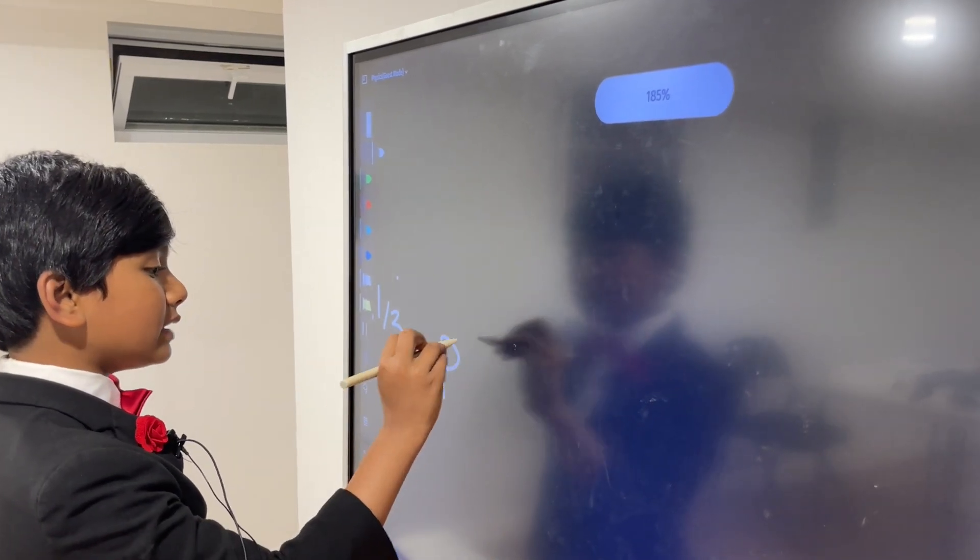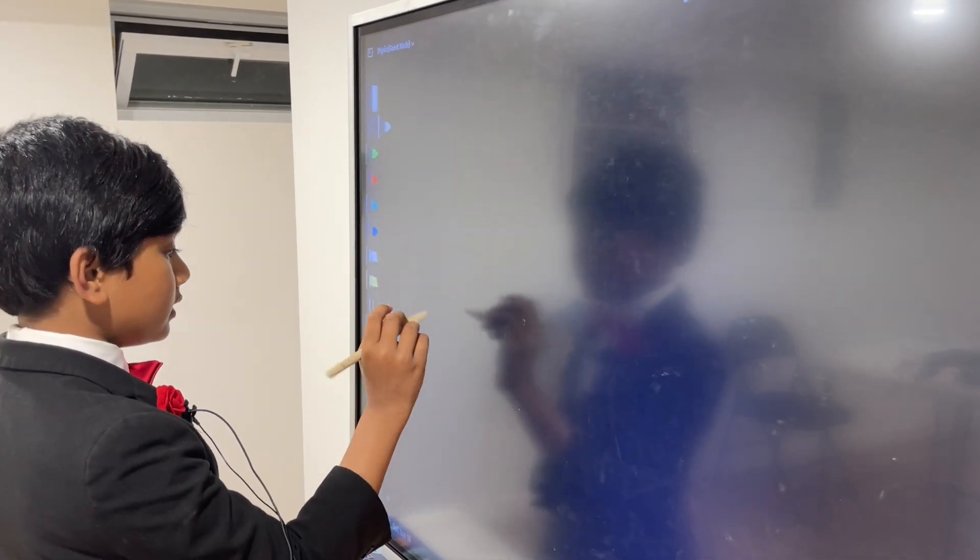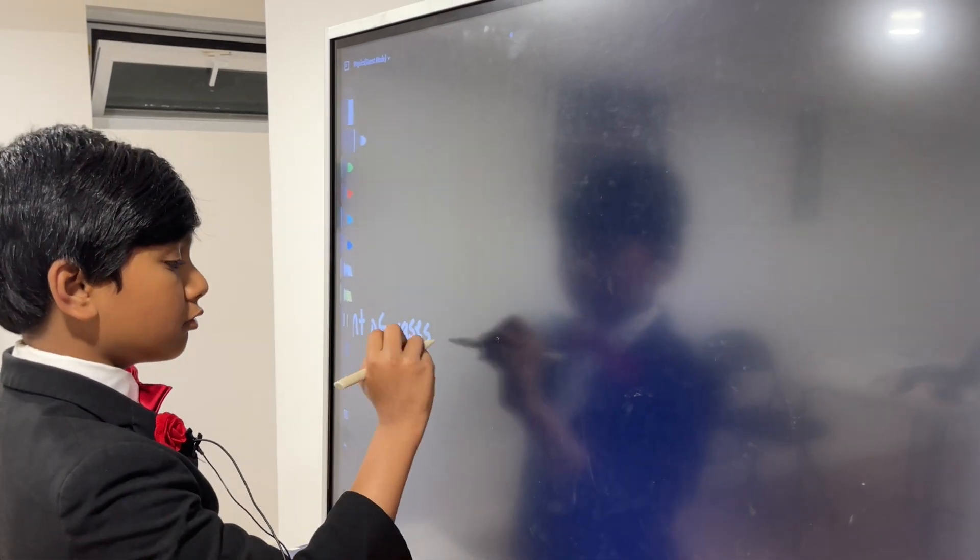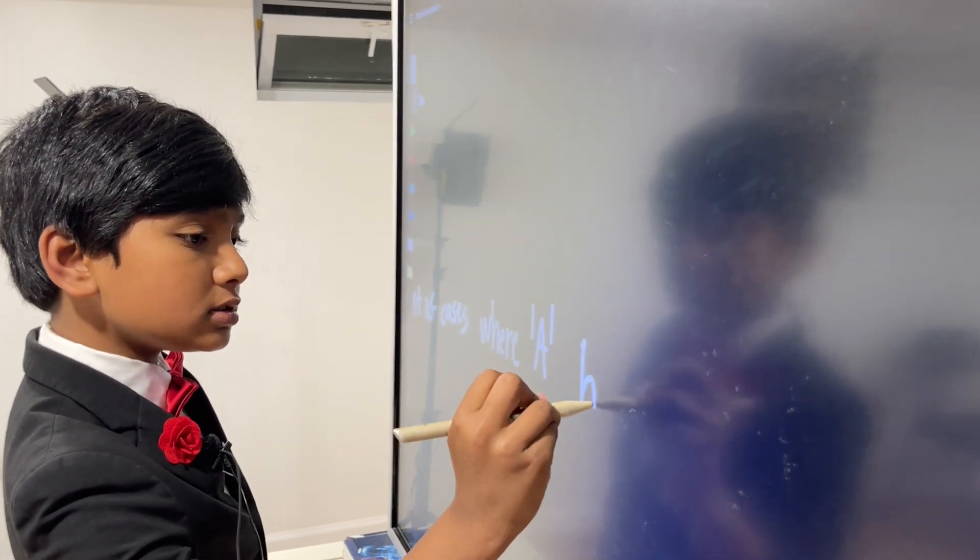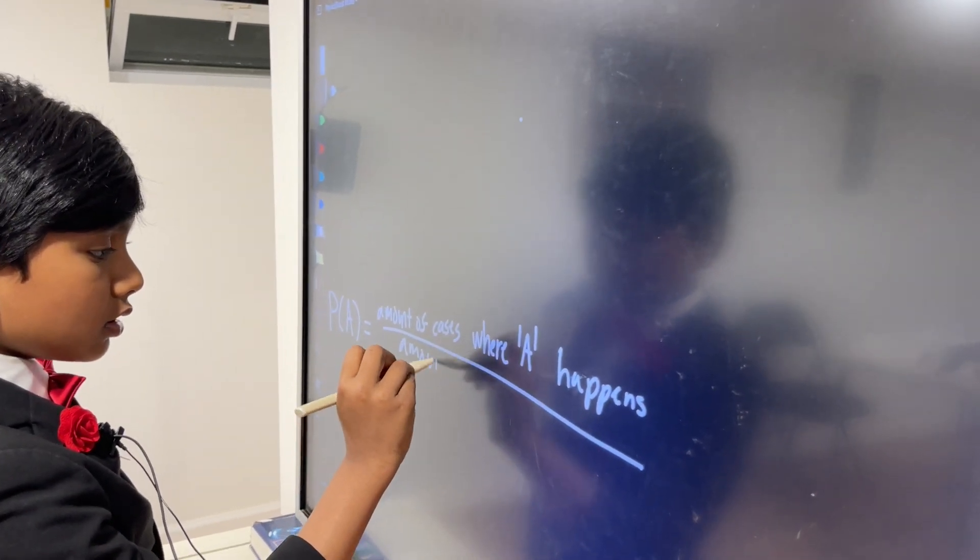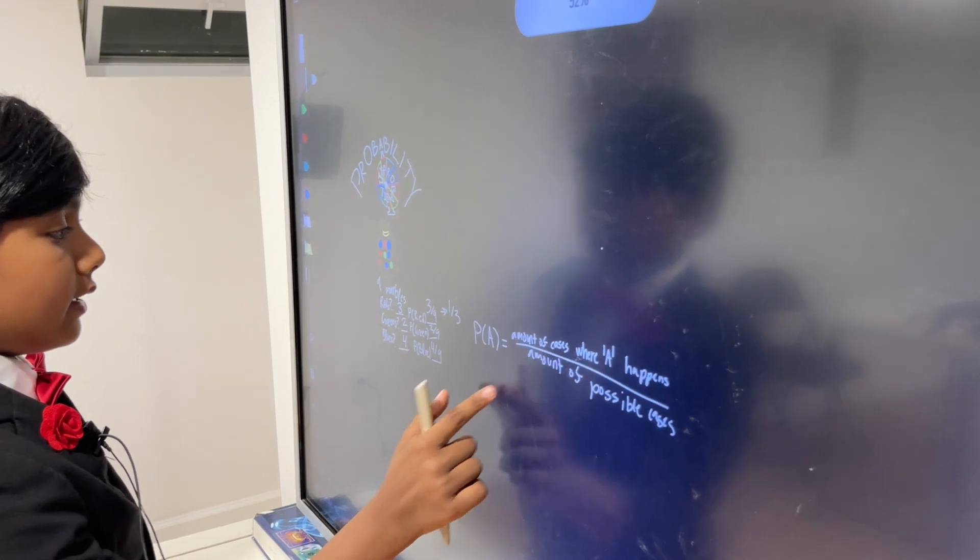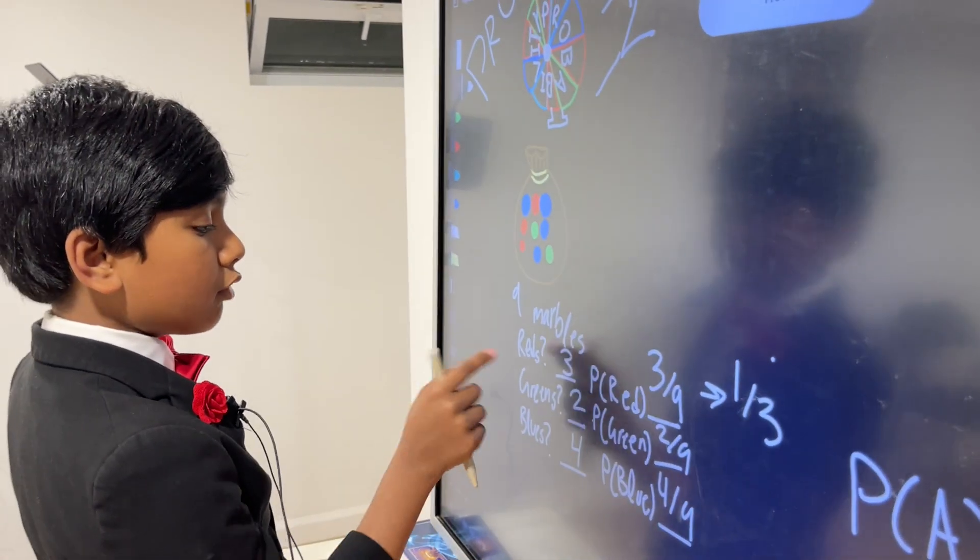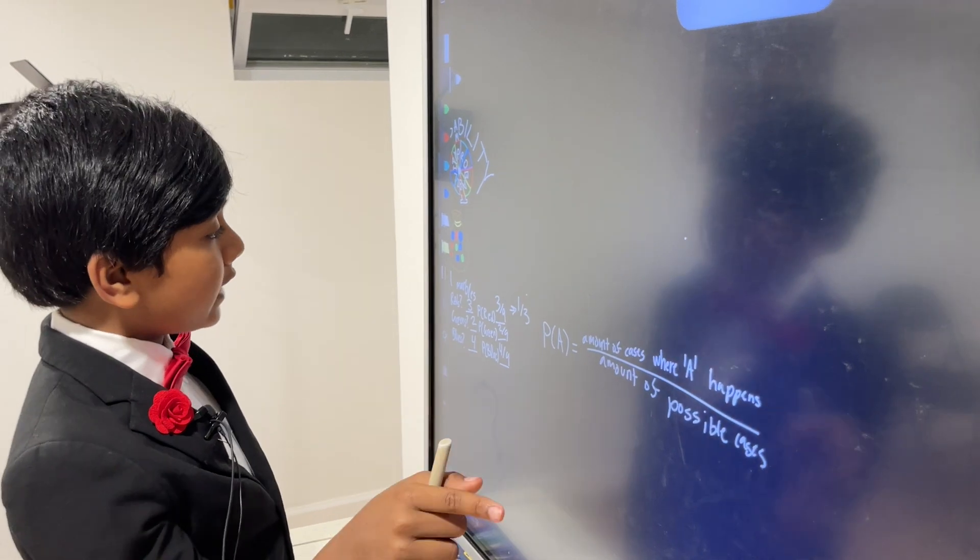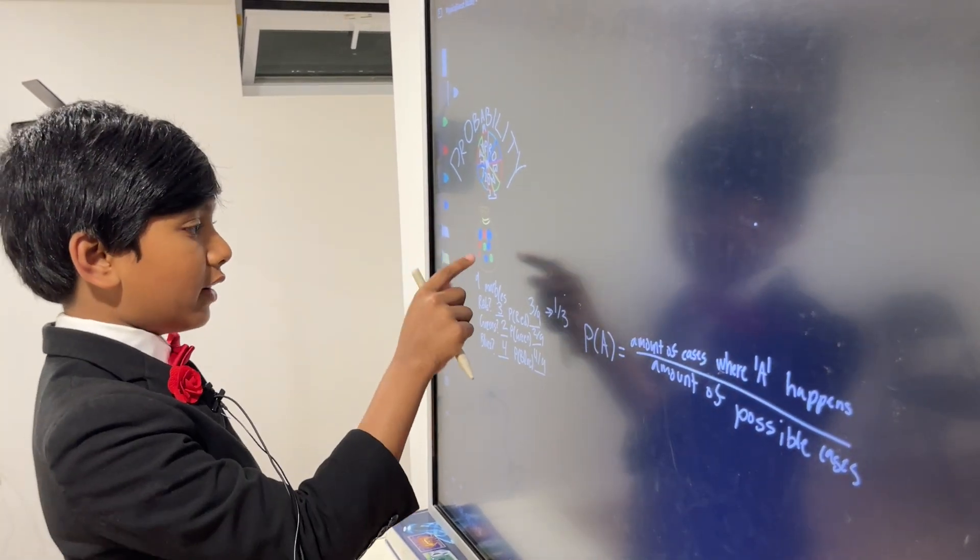So, essentially, the probability of one thing, let's call that thing A, is equal to the amount of cases where A happens divided by amount of possible cases. So, for example, A in this case, if we were taking a red marble, would be the chance of us taking out a red marble from the bag. And the amount of cases where that would happen would be three, and the amount of possible cases would be nine.